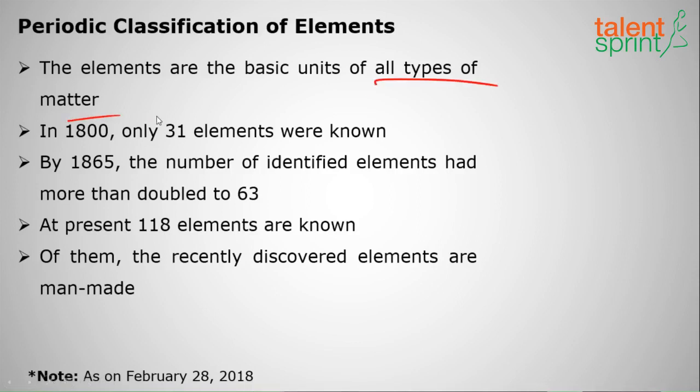In 1800, only 31 elements were known. By 1865, 63 elements were known. At present, as of February 28, 2018, we have 118 elements known in the periodic table.